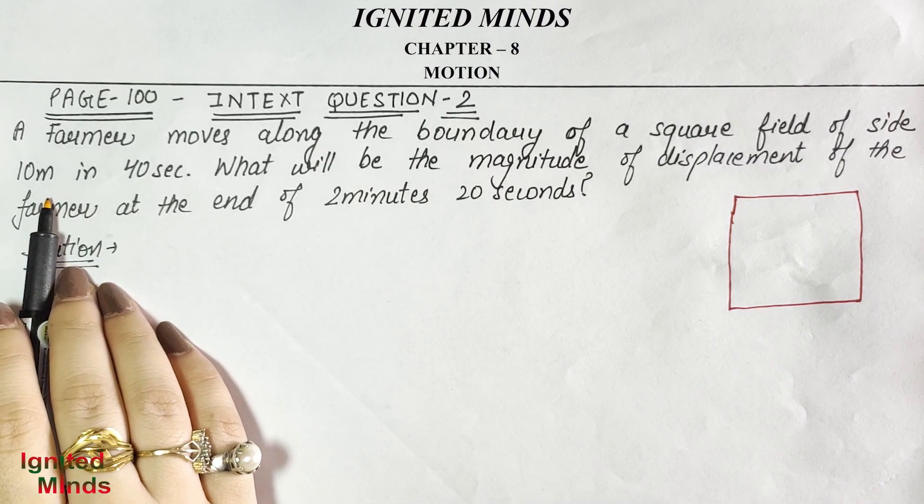Because we are counting rounds — each 40 seconds is one complete round of 40 meters. After three complete rounds (40+40+40) and 20 meters in the remaining 20 seconds, the total distance traveled is 140 meters.